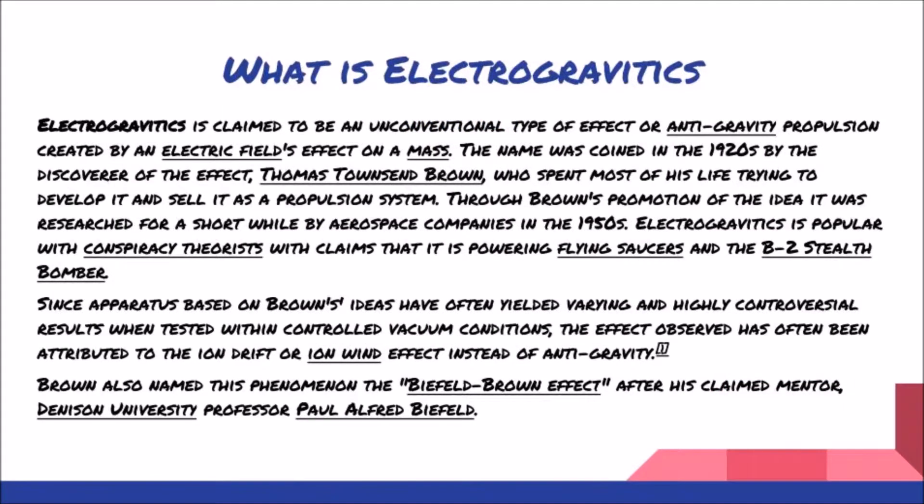What is electrogravitics? You can stop and read this if you want, but I'll just give a basic summary. It's high voltage with a positive and negative. It always goes to the positive. It creates ion wind or a gravitational wave. You want to look up T. Townsend-Brown and Otis T. Carr.